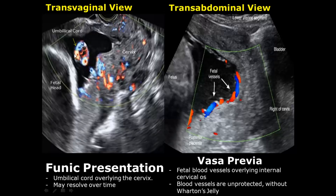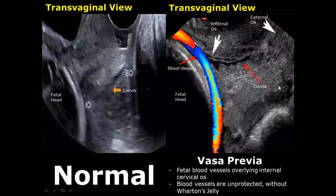This funic presentation may resolve over time. Whereas in vasa previa, we do not see any part of the umbilical cord floating in the amniotic fluid. Here is a transvaginal view showing a normal image and a vasa previa — there are fetal blood vessels overlying the internal cervical os, whereas in the normal image there will be no fetal blood vessels present there.